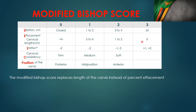For effacement, it works the same way but in reverse. A cervical length of zero — meaning completely effaced — is good, so it scores three. A length of one to two centimeters means the cervix is lengthening, so the score gets worse, scoring two.